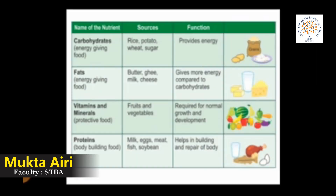Now let us see the nutrients in this table. Carbohydrates are energy giving food. The sources of carbohydrates are rice, potato, wheat and sugar, and the function of carbohydrates is to provide energy. Fat is also energy giving food. The sources of fat are butter, ghee, milk and cheese. The function of fat is to give more energy compared to carbohydrates.